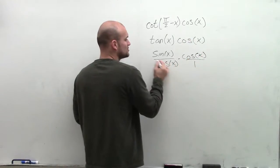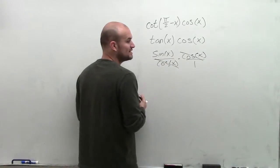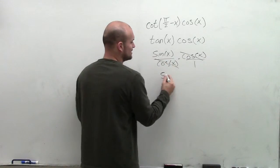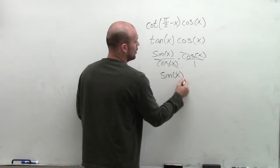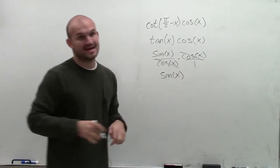So therefore, I know that these are going to divide to 1. Therefore, this will just leave me with sine of x over 1, which is just sine of x.